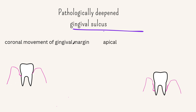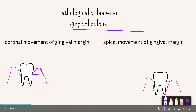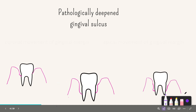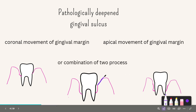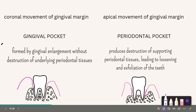The pathologically deepened gingival sulcus can be due to coronal movement of the gingival margin, apical movement of the gingival margin, or both combined. Here the junctional epithelium is in the same position while the gingival margin has moved coronally. In another case, the junctional epithelium has also migrated apically along with the gingival margin, or both movements occur together.